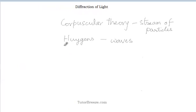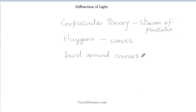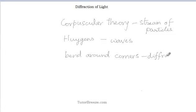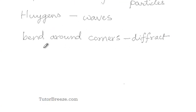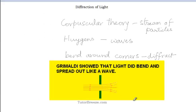Newton challenged the wave theorists by saying that if light were actually a wave, then it should be able to bend around corners or diffract. Since light doesn't bend around corners or get diffracted, Newton argued that light is not a wave but is a stream of particles.